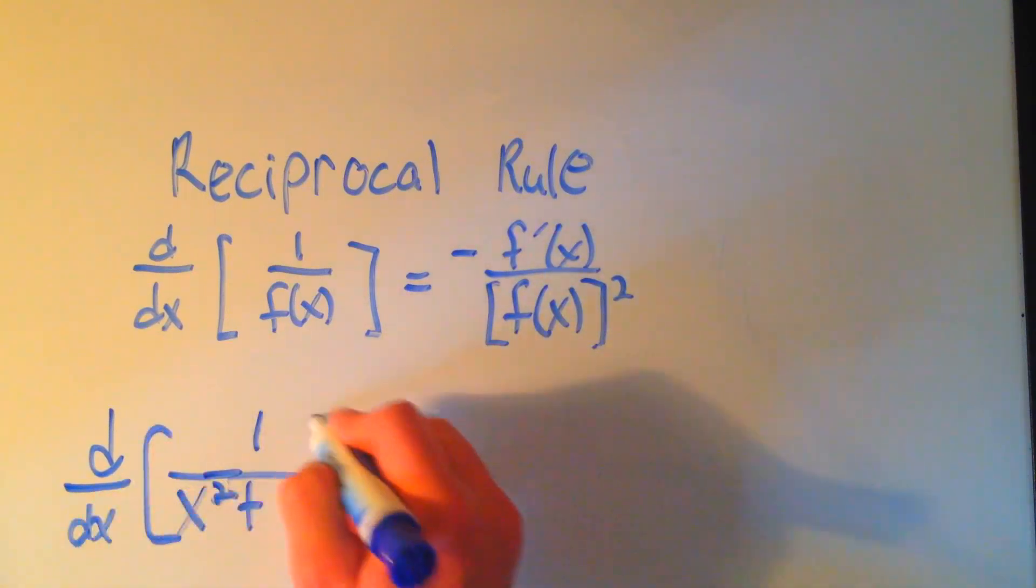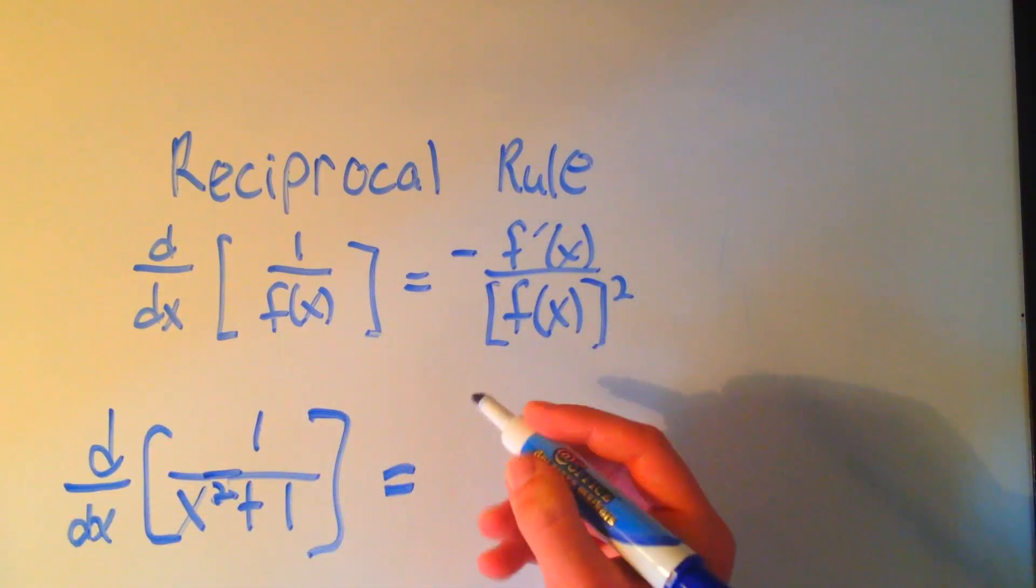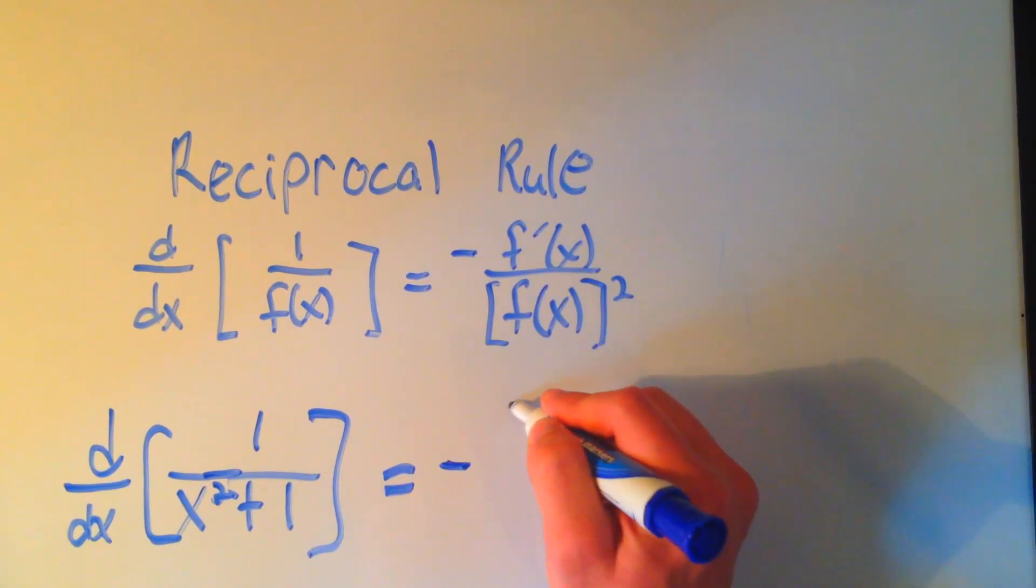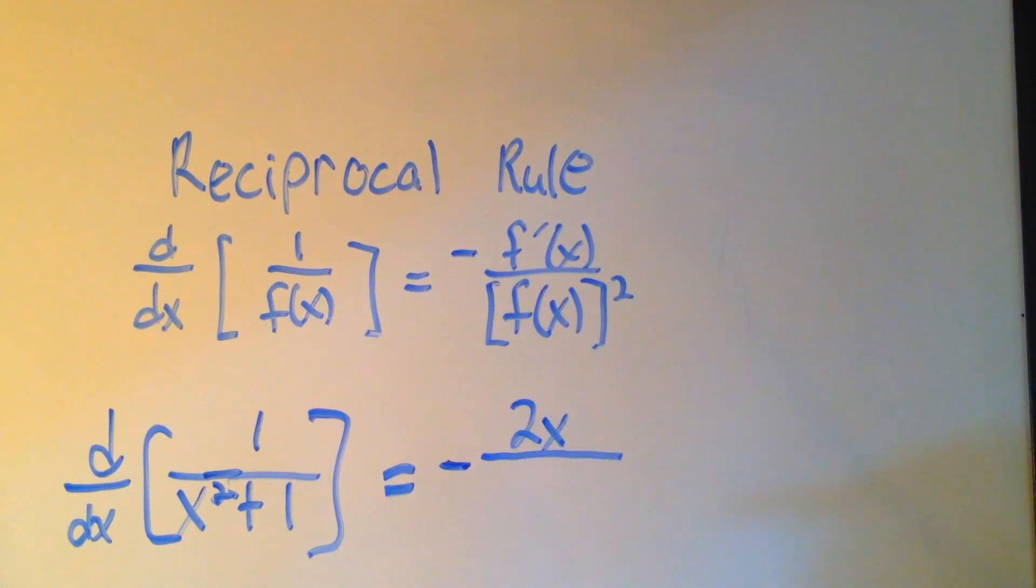The reciprocal rule says I write a minus sign out front, I take the derivative of this thing by itself. If I were to use the power rule on x squared plus 1, that derivative would be 2x. Then I copy that function on the bottom, I'll rewrite x squared plus 1, and I'll write it quantity squared.